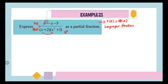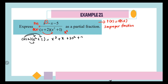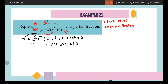We are going to take x cubed minus x minus 5 divided by (x plus 2)(x squared plus 1). To perform long division, we need to expand (x plus 2)(x squared plus 1). When we expand this, we get x cubed plus 2x squared plus x plus 2. We rearrange from the highest power, and now we can perform our long division.